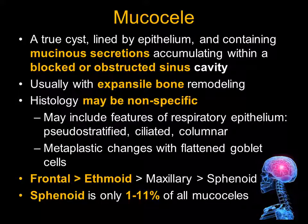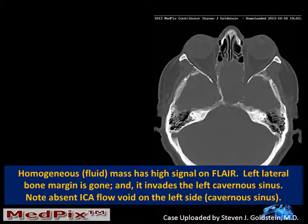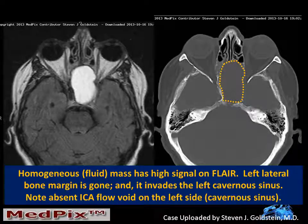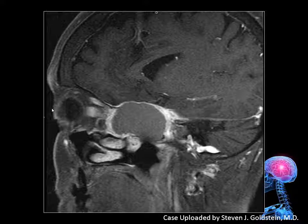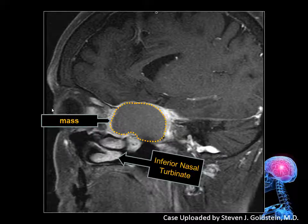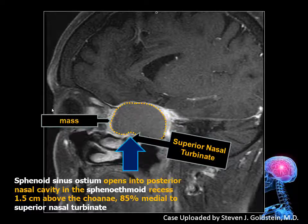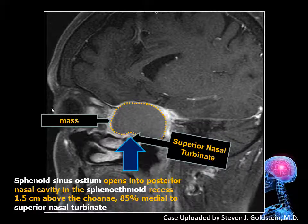The sphenoid represents less than 10% of all mucoceles. Our patient returned for a follow-up visit in August because of worsening symptoms, and now we can see there has been a change. The sinus cavity is now enlarged further. There is high attenuation material accumulated within the sinus cavity, and we have lost part of the bony margin in the left middle cranial fossa in the area of the cavernous sinus. On the sagittal image, we can see the mass with homogeneous fluid signal, and we can see the inferior, middle, and superior nasal turbinates. This is the location for the sphenoid sinus ostium, just medial to the superior nasal turbinate.